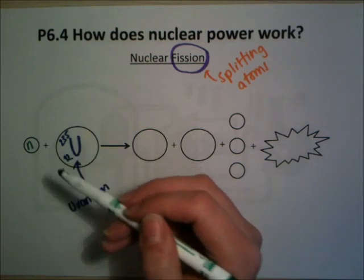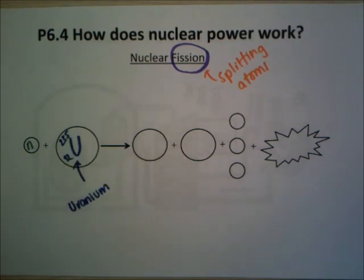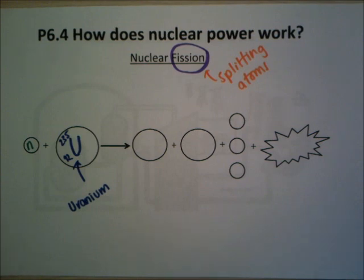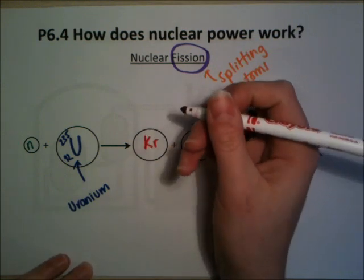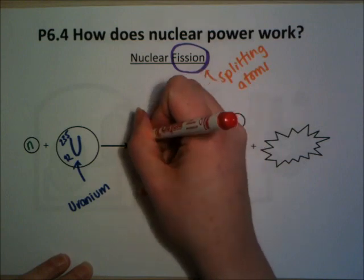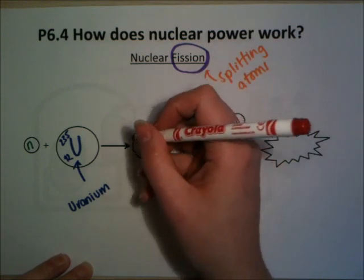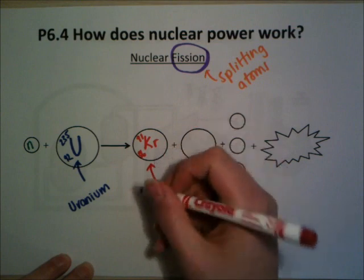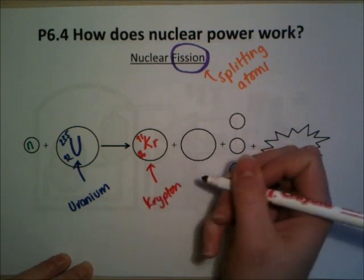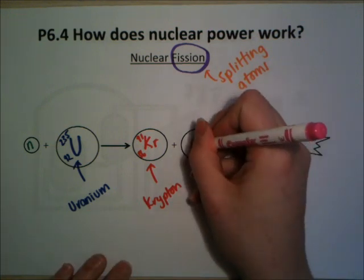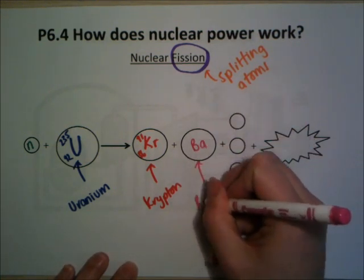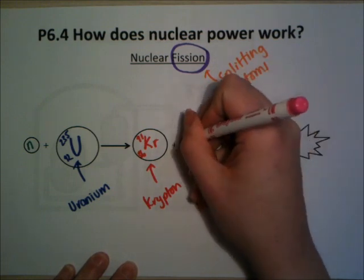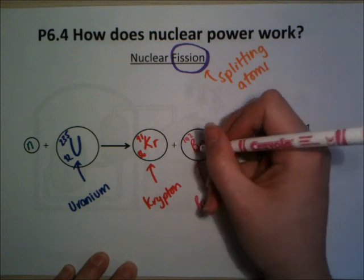This unstable atom doesn't just spit out a particle — it breaks in half. The neutron is absorbed, making the nucleus unstable, and it breaks apart into two new elements: krypton (Kr), with a mass number of 91 and a proton number of 36, and barium (Ba), with an atomic mass number of 142 and an atomic number of 56.